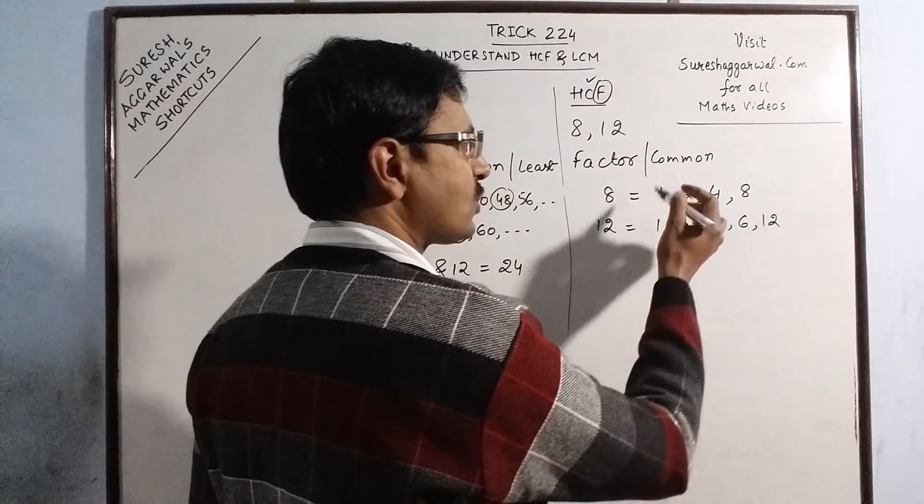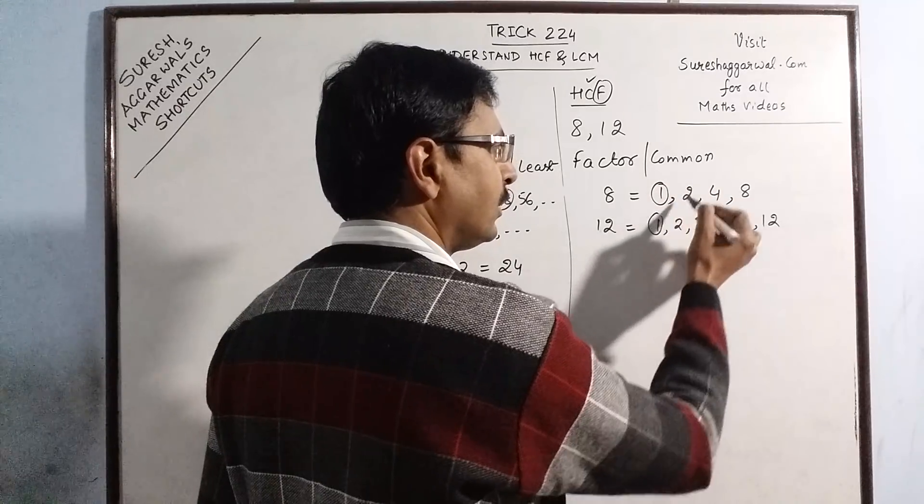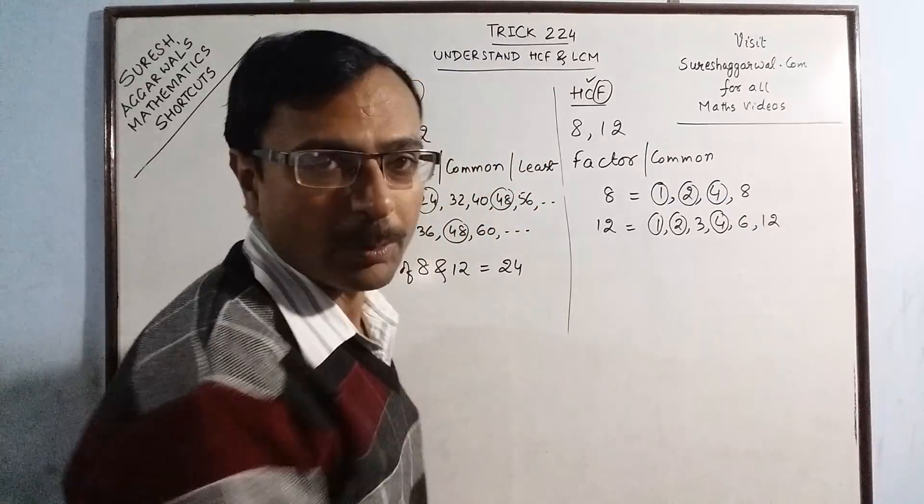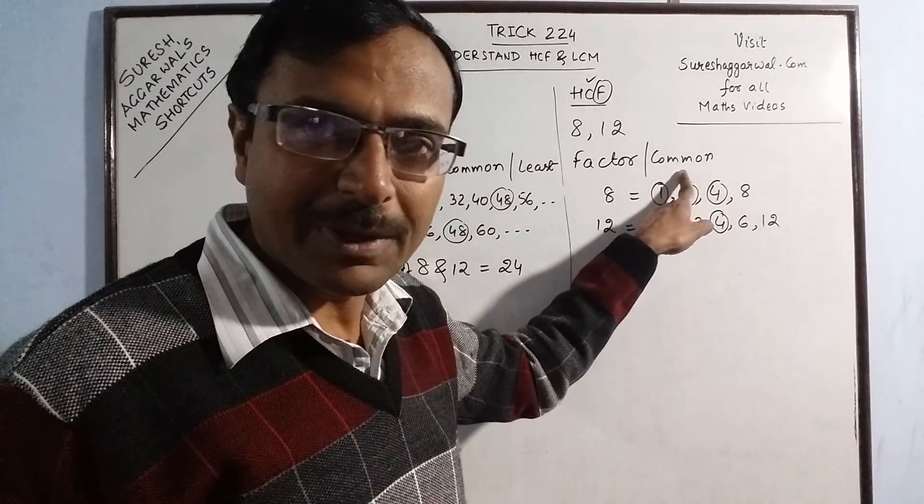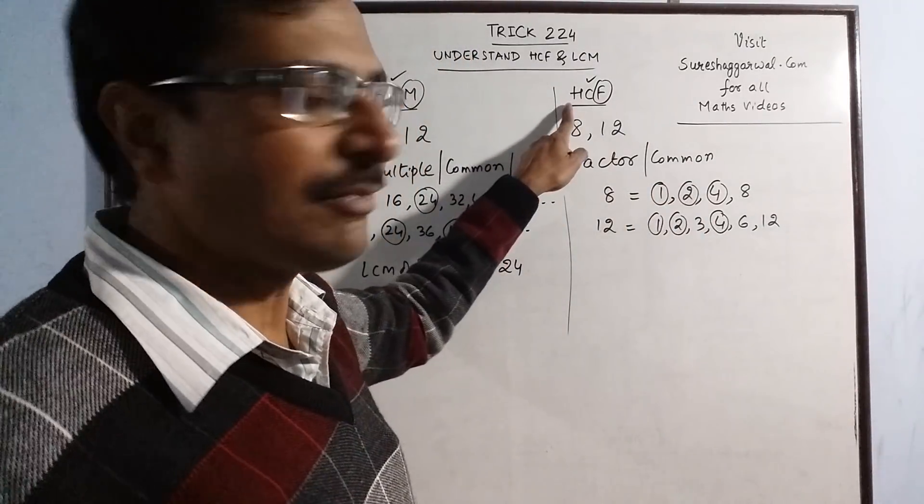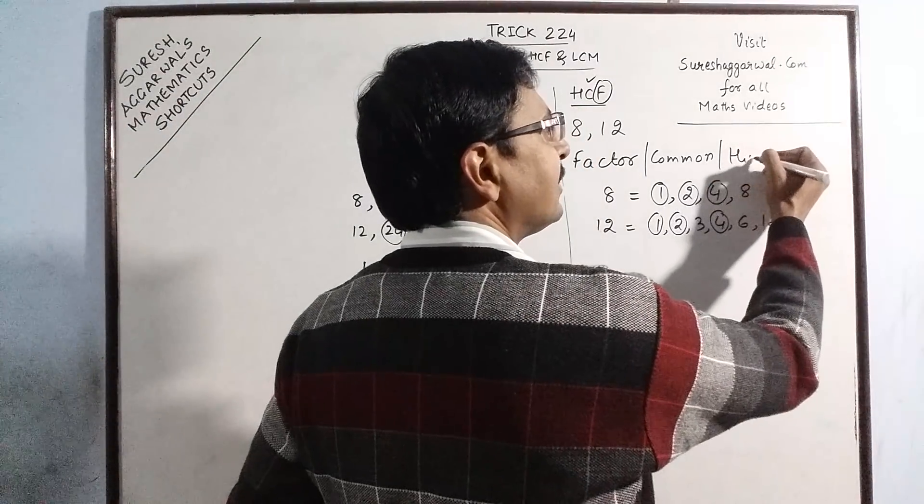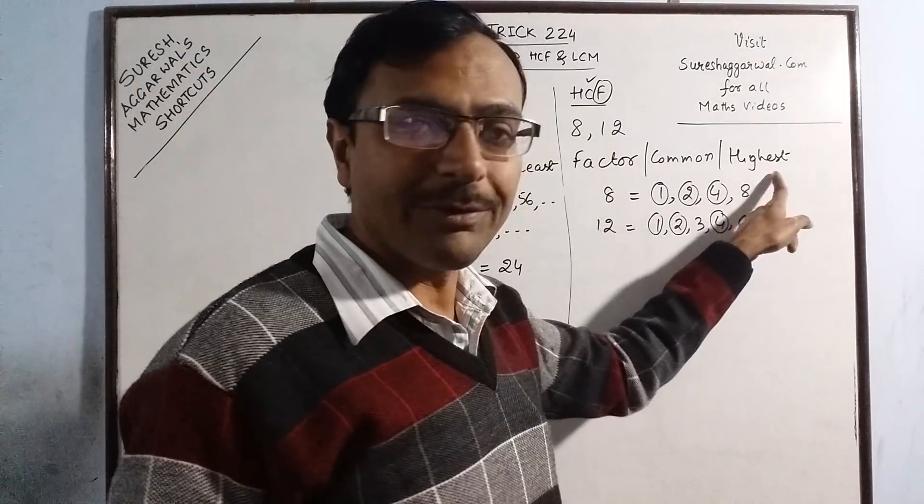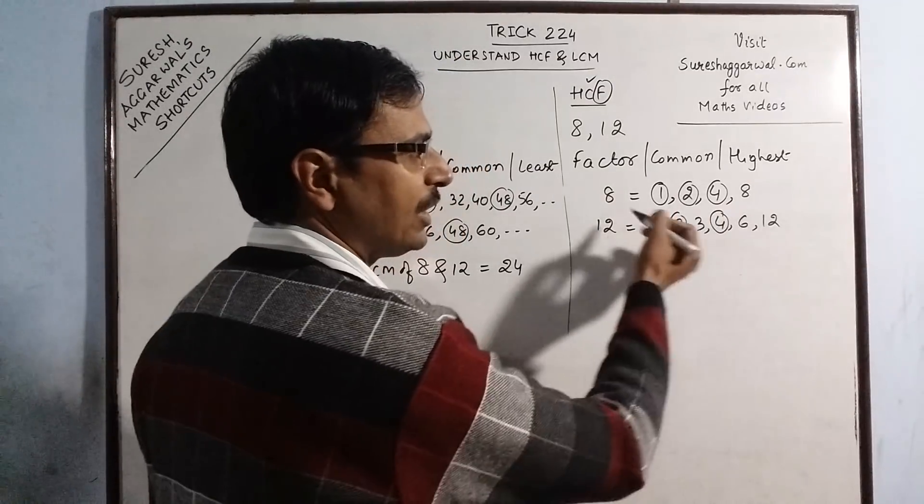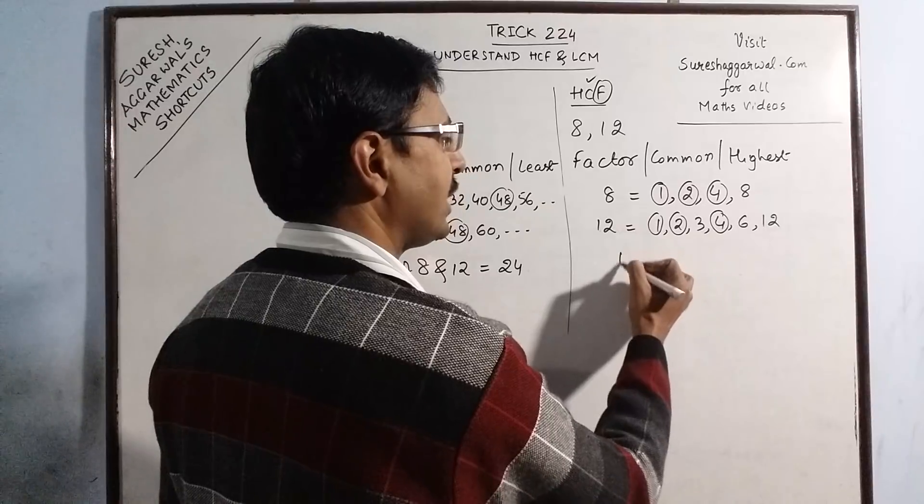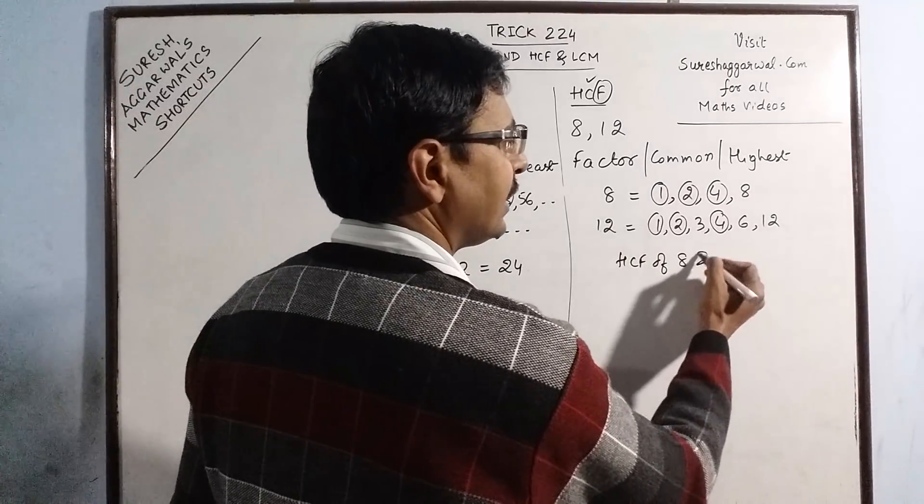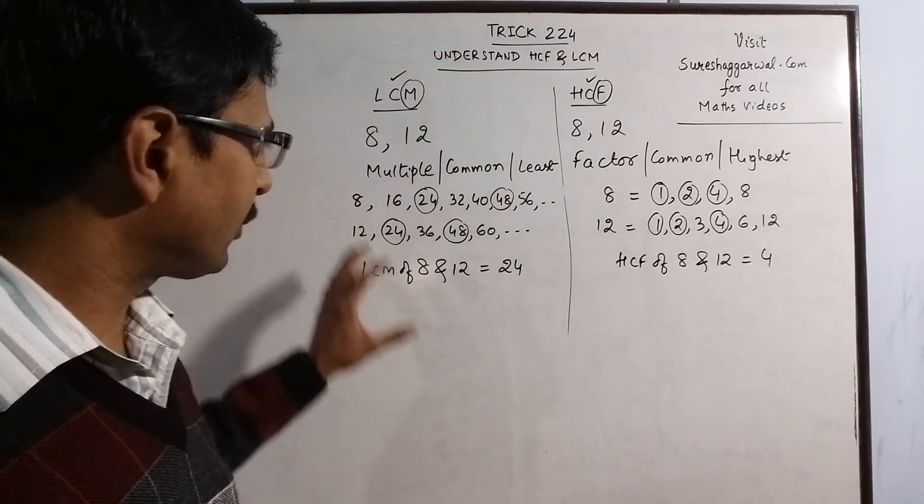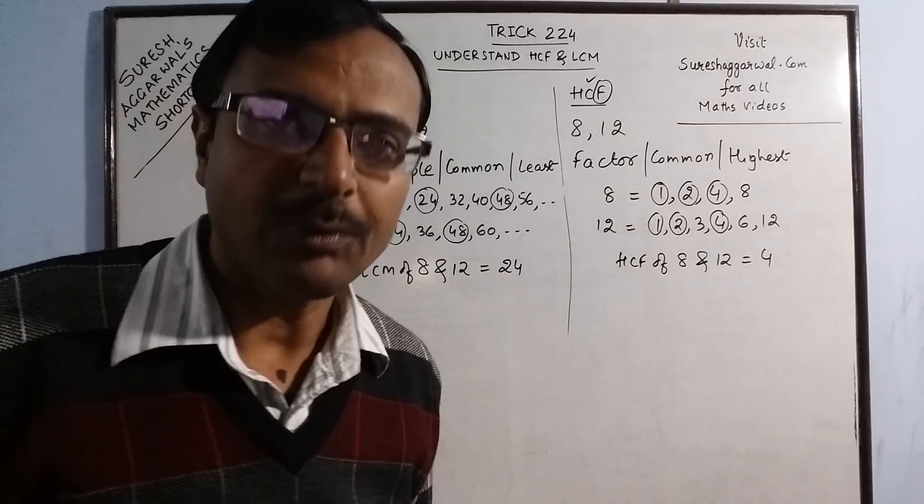Now come to the common part. Now what is common in this? See 1 is common, 2 is common, 4 is common and nothing else is common. So I have taken care of the second alphabet, common also. And now the final alphabet that is H, highest. In LCM we were talking of least, that is the smallest. Now in HCF we are talking of highest. Now see the common factors 1, 2 and 4, which is the highest? 4. So HCF of 8 and 12 is 4.